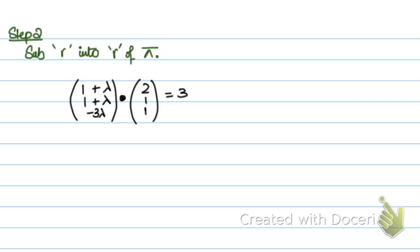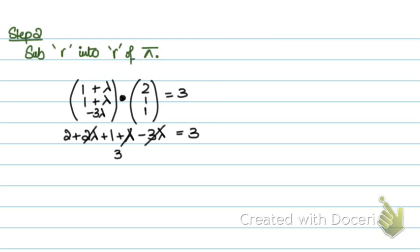And if all the points on the line lie on this plane, the line lies on the plane. So: 2 + 2 lambda + 1 + lambda minus 3 lambda = 3. The lambda terms: 2 lambda + lambda minus 3 lambda = 0. The constants: 2 + 1 = 3. So 3 = 3. Since the left-hand side equals the right-hand side and the lambdas are wiped out, the line is contained in the plane. That's method 1.